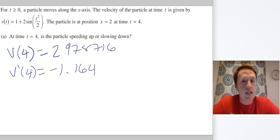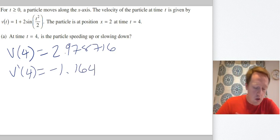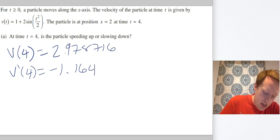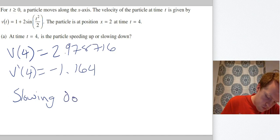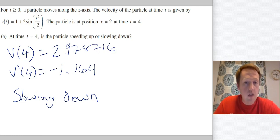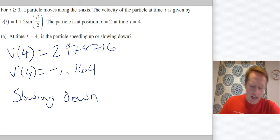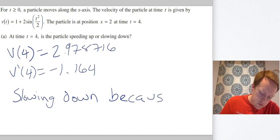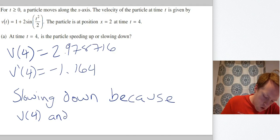So based on that, velocity and acceleration mismatch, so what we're going to say is that it's slowing down. It does not say explain why, you need to explain why anyway. You can't just pick one, it's 50/50, they're not going to give you credit for picking a 50/50 answer. Slowing down because v(4) and a(4) have different signs.